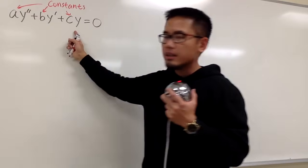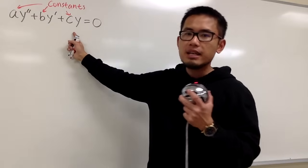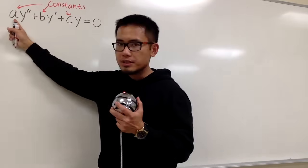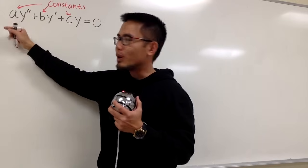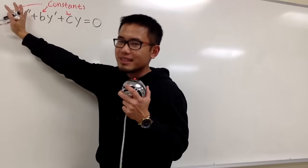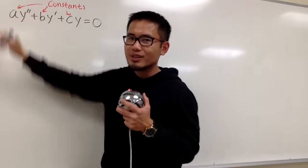a, b, and c are constants, and we don't want a to be 0 — otherwise this term will be gone, and it's not second-order anymore.